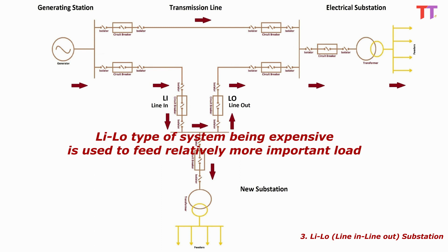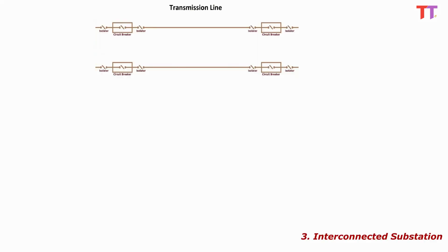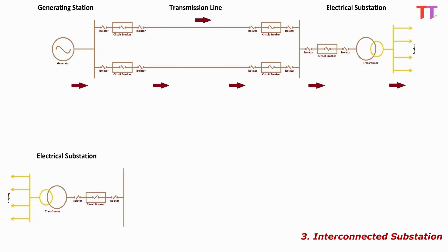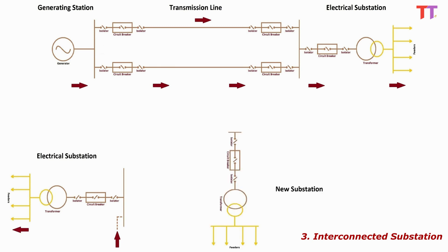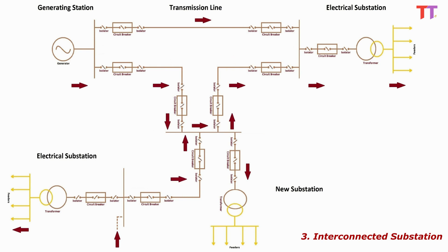Hence such a system, being expensive, is used to feed a relatively more important load. 4. Interconnected substation. In this type of layout, a substation is connected to multiple power sources. Consider an existing transmission line connecting two substations transmitting power in this direction. Also consider one more substation connected to other generating stations or lines and feeding its connected load. A new substation is constructed nearby. From the existing line as well as the existing substation, power sources for the new substation are taken. Now in case of fault on any one of the lines, the other two lines continue to supply power. Also in case of breakdown of any two lines at the same time, the third line continues to supply power.